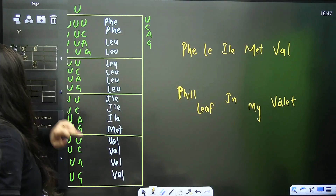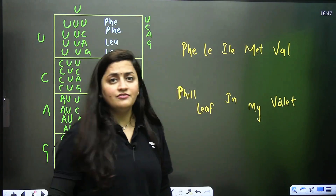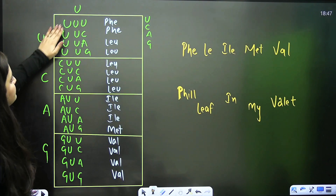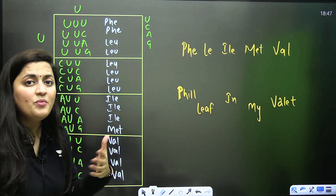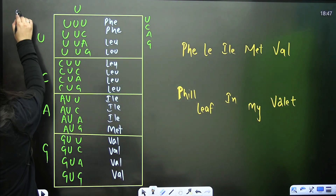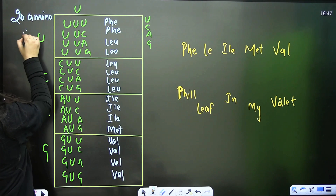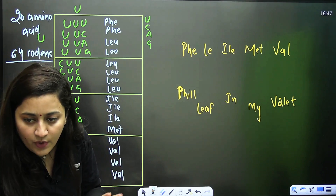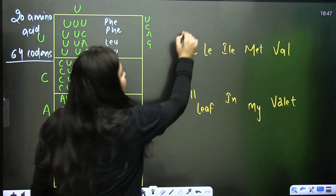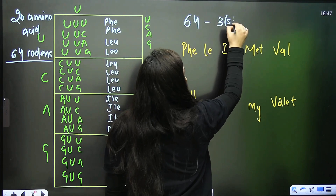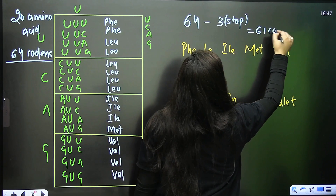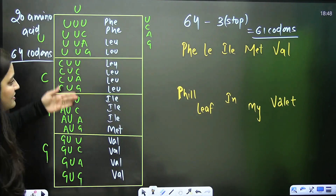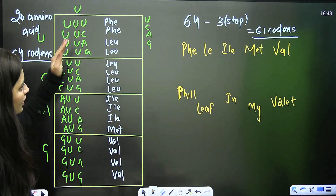Now, what about the amino acid tricks? We know we have 20 amino acids and 64 codons — these are the basic facts. Out of 64 codons, 3 are stop codons, so 61 codons give information about amino acids, and 3 stop translation. Now let's look at the first column: first base U, second base U; first base C, second base U — and how to remember these amino acids.